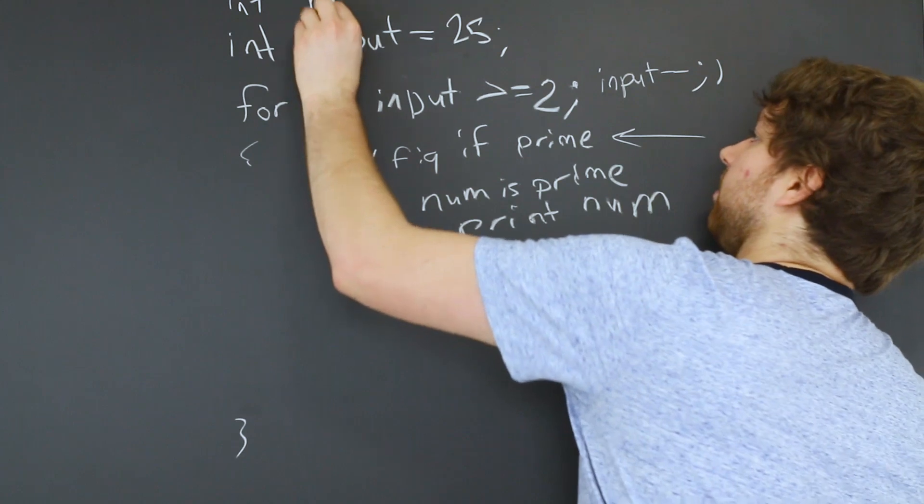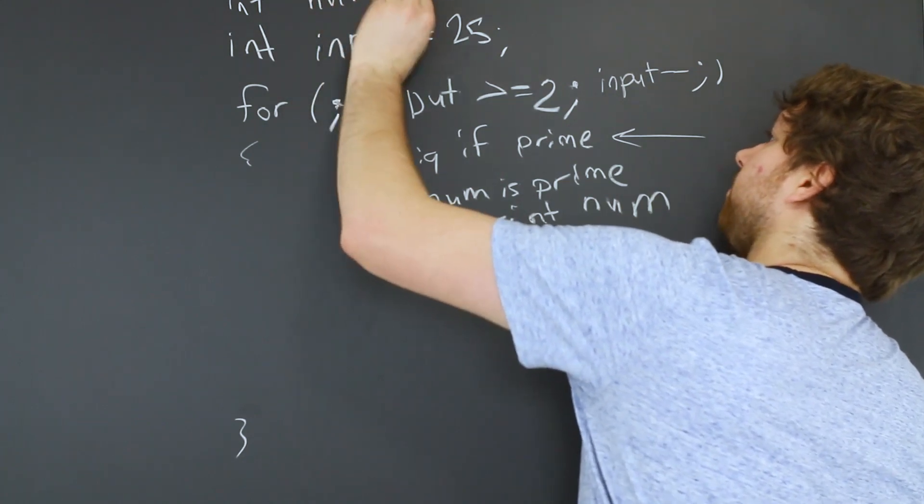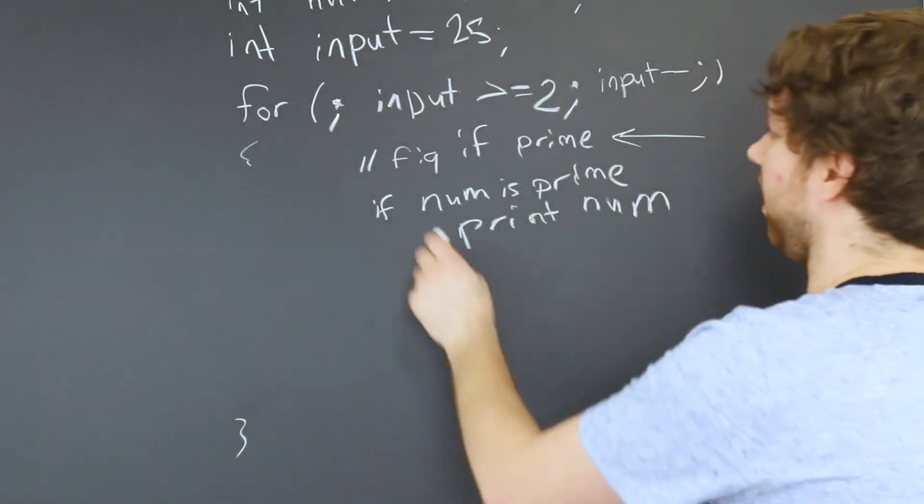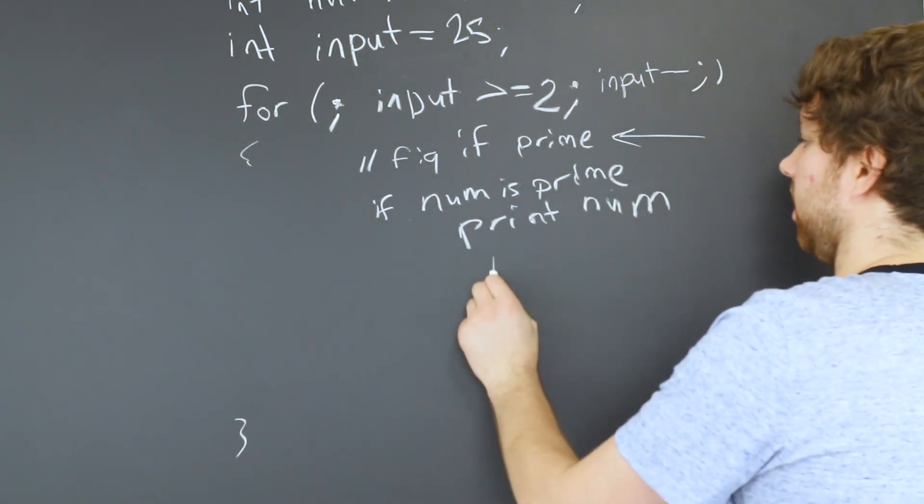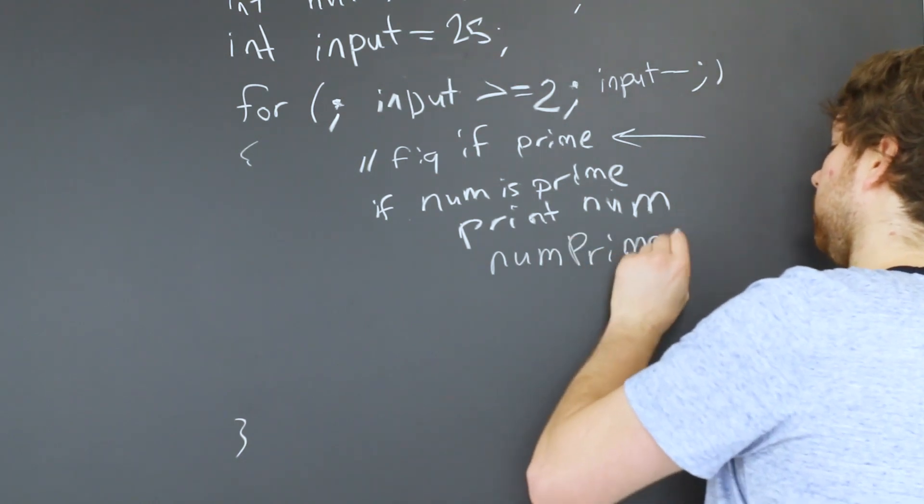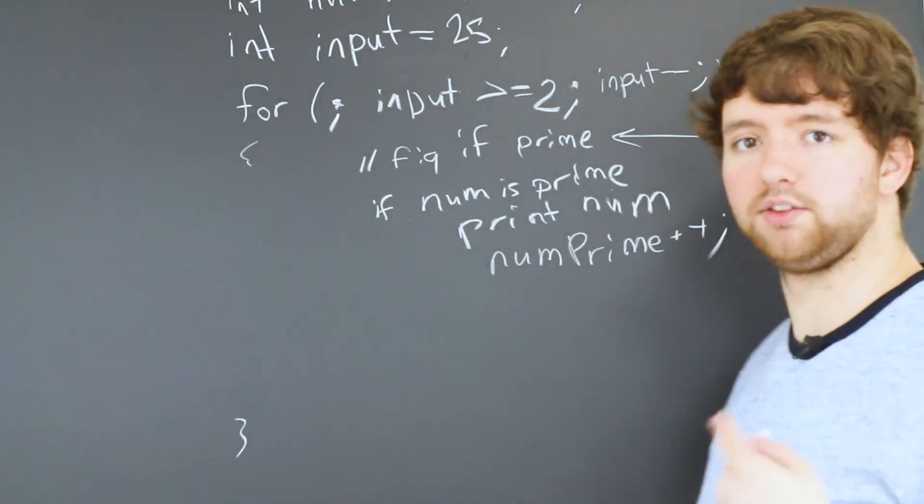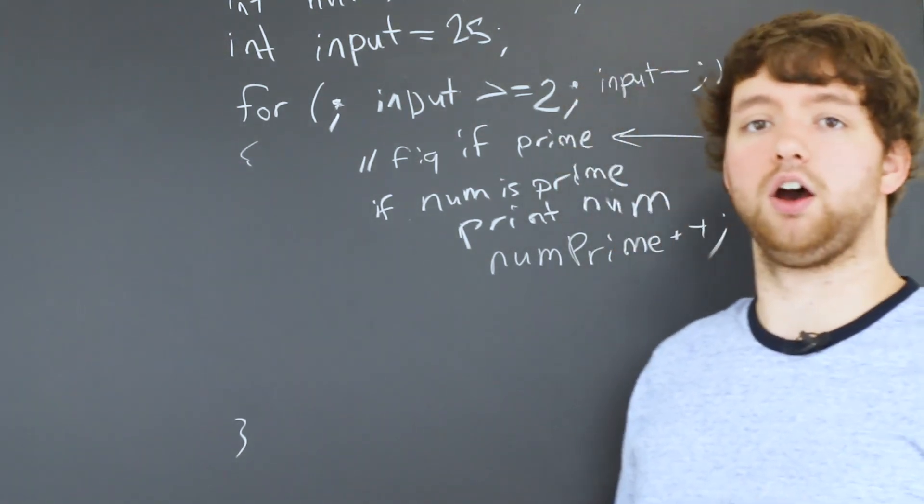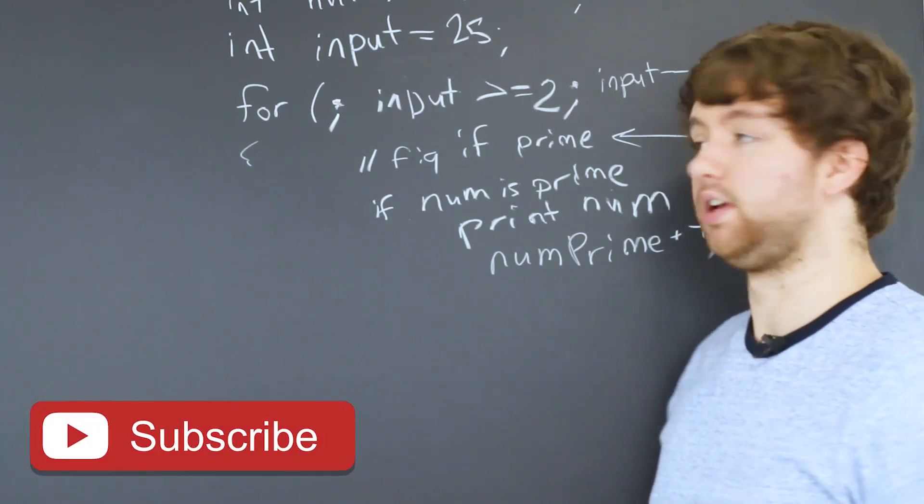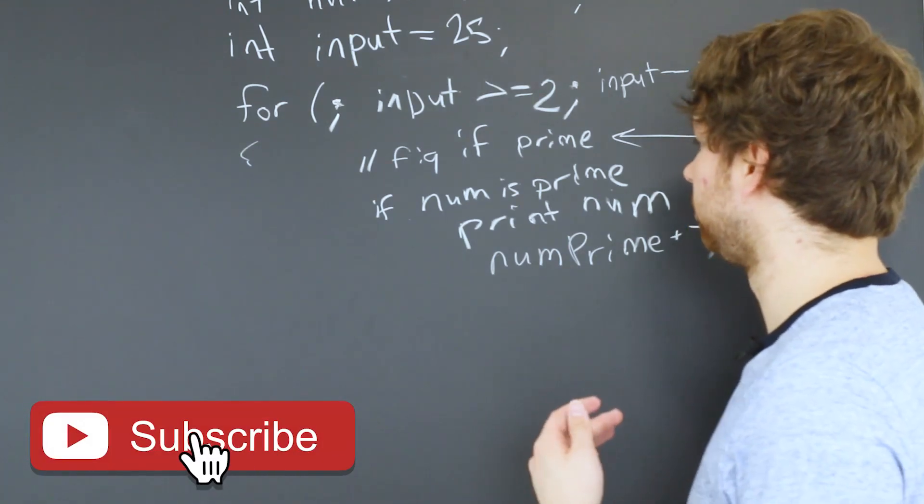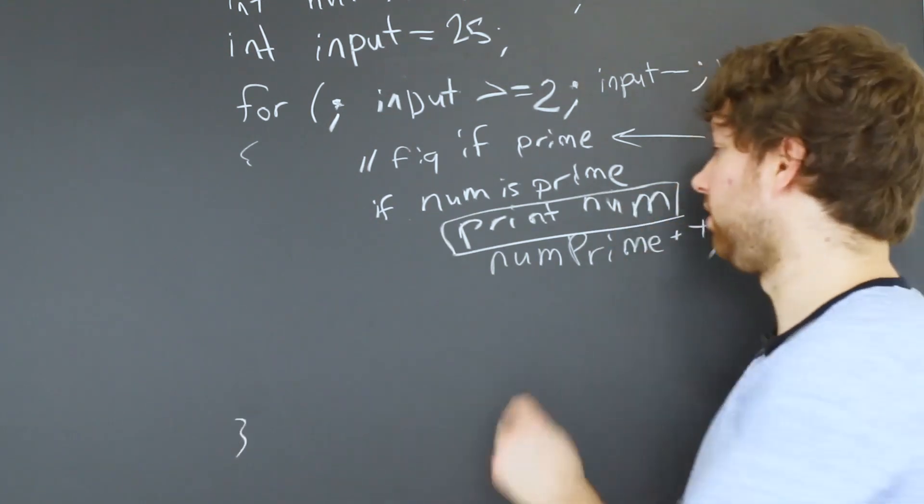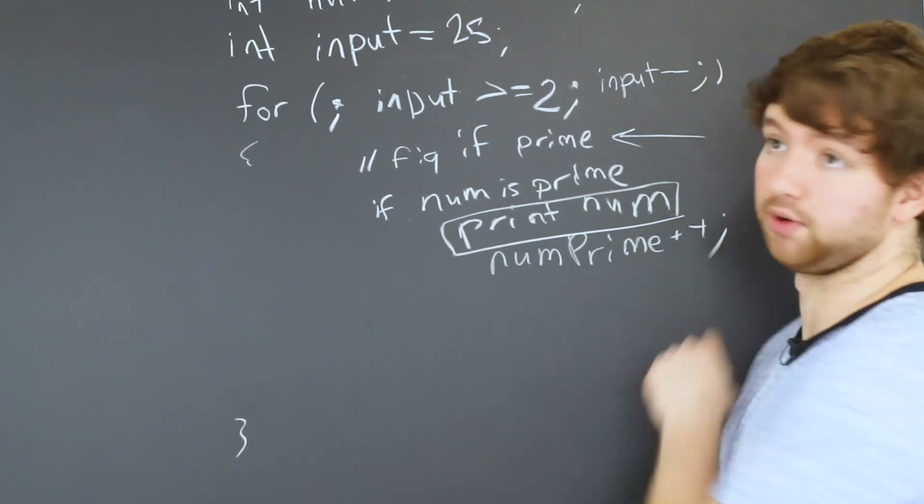And then if the number is prime, we could say num prime plus plus, basically incrementing the count of prime numbers. And then when we're done, we can output that numbers prime. And it would print out all of the prime numbers. And then we could say the total number of prime numbers is num prime.